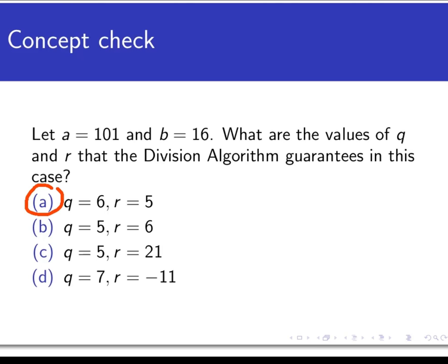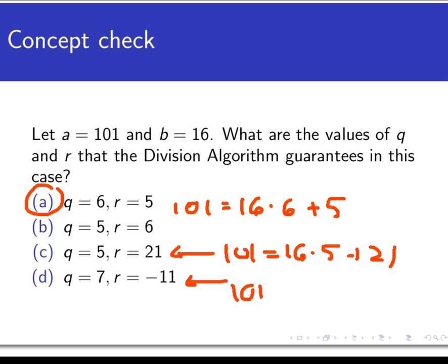So the right answer here is A, and we can check this by simply doing the math in the division algorithm. 101 is equal to 16 times 6, 16 times 6 is 96, plus 5 left over. But you might have noticed in trying to check these things that answers C and D also check out. 101 is also equal to 16 times 5 plus 21, and 101 is also equal to 16 times 7 plus negative 11. So why is A right, but C and D are wrong?